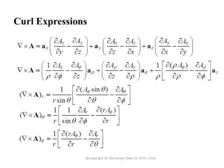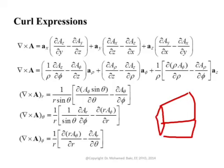You can repeat exactly the same procedure using the cylindrical differential elements. You carry out three surface integrals — making each element go to zero — and this gives you each component of the curl. For example, the circulation in a given face gives the curl component normal to that face, in the φ-direction, and so on. The same applies for spherical coordinates, though the expressions become more complicated.